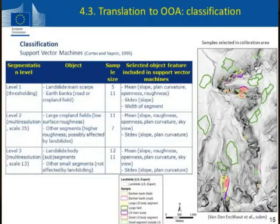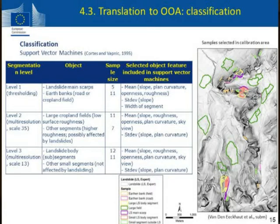For the actual classification we use support vector machines, trying to train our classifier, working on different levels. Having identified what we thought were meaningful scale parameters for these different features, we start with some general thresholding to find possible scarp areas, getting rid of everything else — that tended to be relatively easy. At the second level, trying to identify our principal false positives, so the cropland fields and things like that. Then at an even lower scale factor of 13, we piece together the landslide bodies starting from the scarp, growing from the side scarps inwards towards the toe.